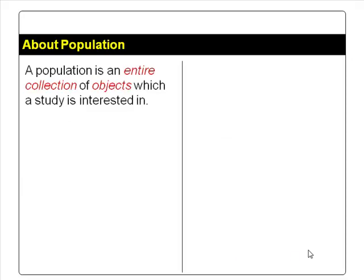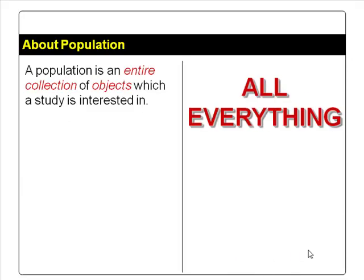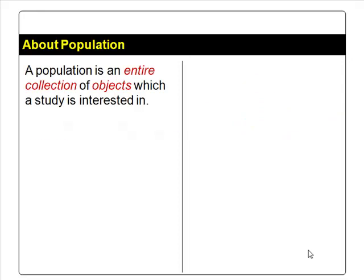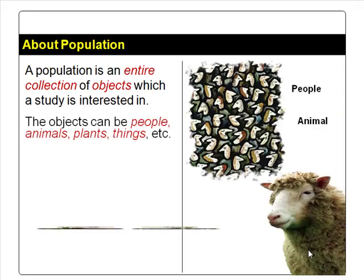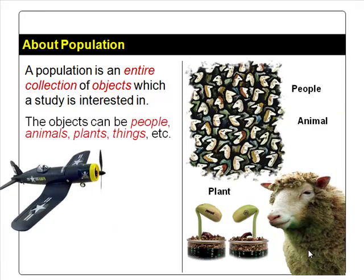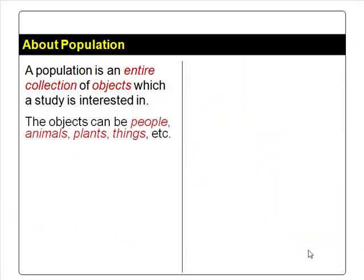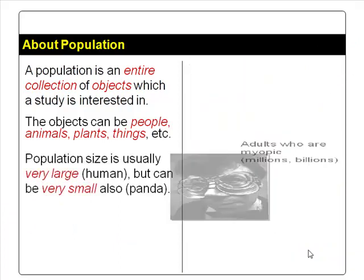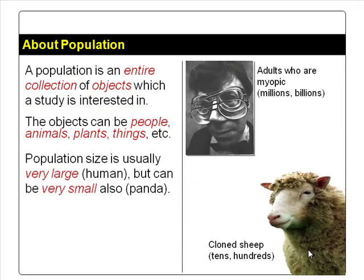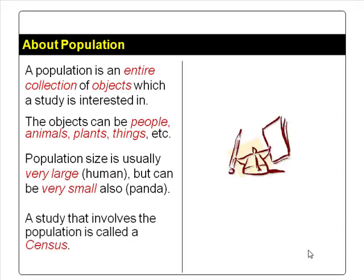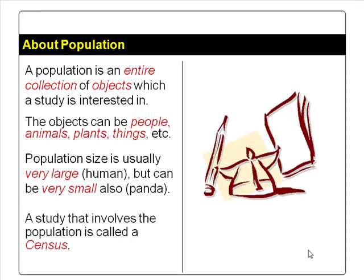First, we look at what a population is. A population contains the entire collection of objects a study is interested in. The objects can be people, animals, plants, or products. The population size can be as large as millions or billions, or as small as tens or hundreds. A study that involves the population is called a census.